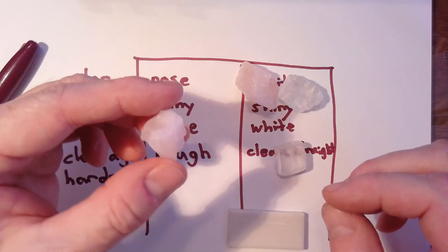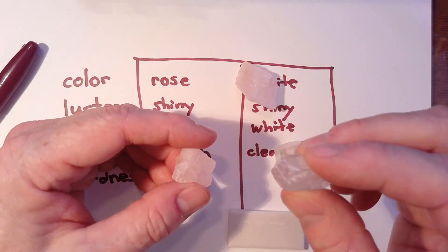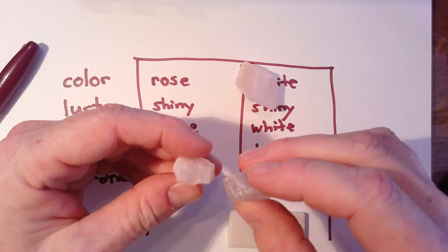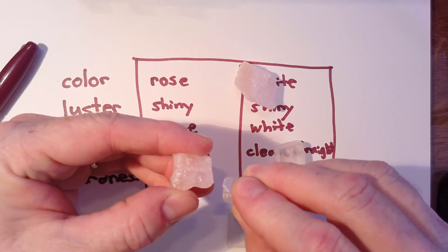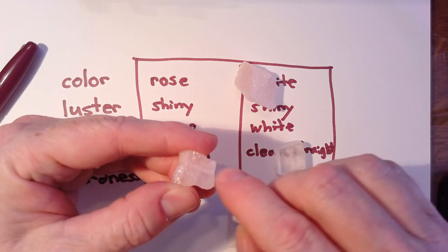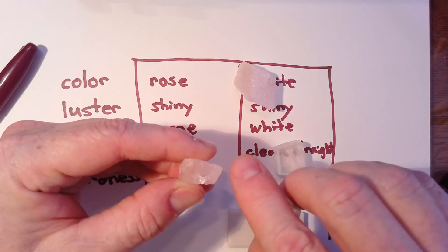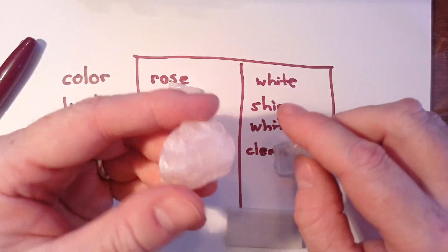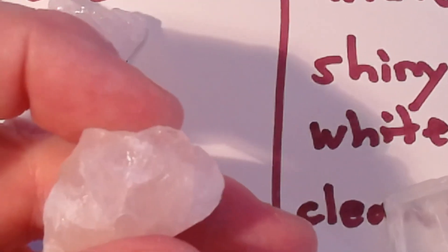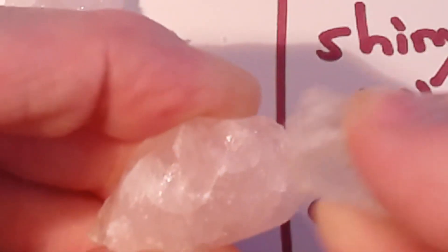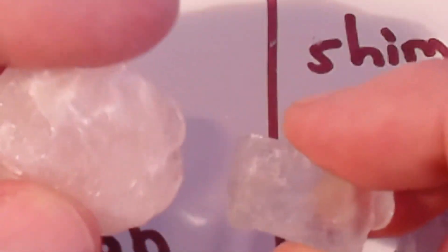I'm going to start with my shiny rose piece on the left and use the shiny white piece to see if I can scratch it. Let's double check — no, that looks like a fracture line in the mineral. Let's try another side. That looks like it left a scratch, but it wiped right away. Doesn't really seem to be scratching it. Let's try it the other way around — take the rose piece and see if it will scratch one of the flat faces of the white piece.